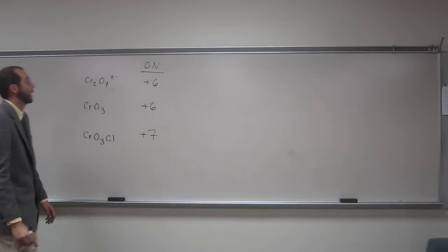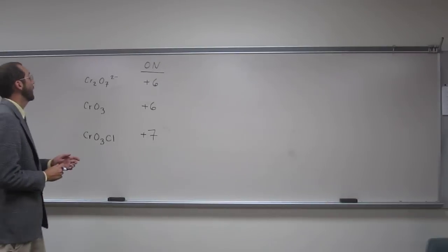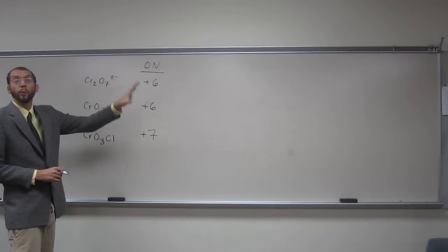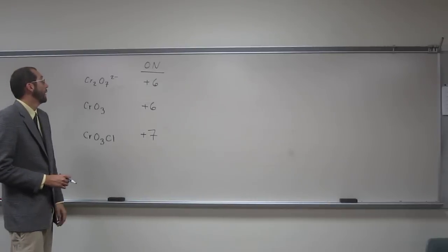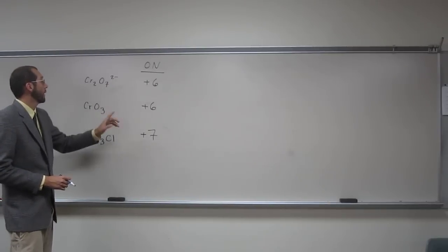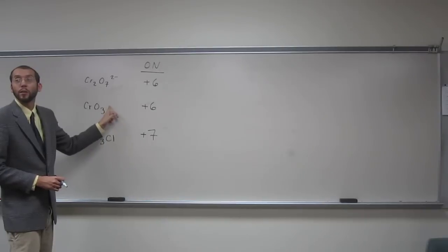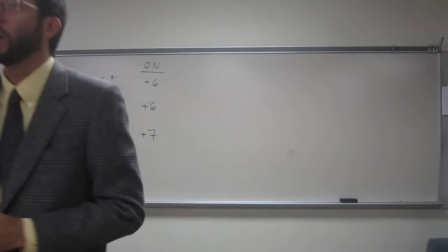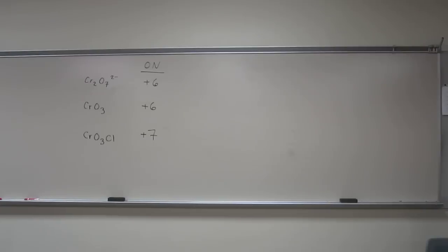So in that one, the oxidation number of chromium is plus 7. So again, I think the key that a lot of people have a problem with is recalling that they need to set it equal to one of these charges. So in these cases, the charge or overall oxidation of the whole complex is 0.